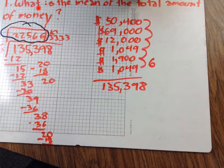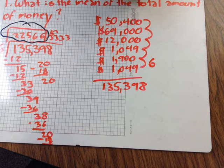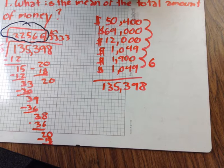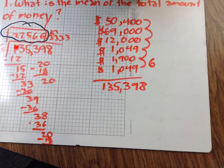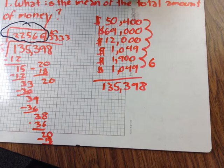What is the mean of the total amount of money? Practically, what we're doing is just finding the average. We're adding up all the amounts of money, and that gives us a total of $135,398. Then we're dividing that by 6, because there are 6 amounts of money. After dividing, we get $22,566.333, which would round to $22,566.34.